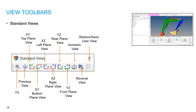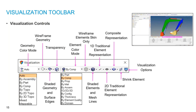For visualization controls, first view the geometry control — CAD is displayed in color mode. You can view the wire frame, and this is transparency. This is the component display. You can display the component by part, component, properties, by material, assembly, or 1D or 2D. You can also view the mesh wire frame, view shaded elements, view 1D traditional elements, and represent 2D or composite elements.